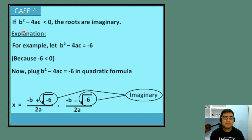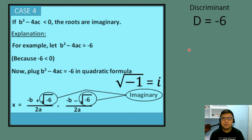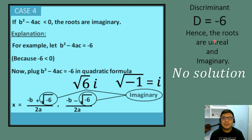Case 4: if b² − 4ac is less than 0, the roots are imaginary. For example, if b² − 4ac = −6, the square root of −6 is imaginary. Therefore, when the discriminant is less than 0 — any negative number — the roots are unreal and imaginary: no solution.